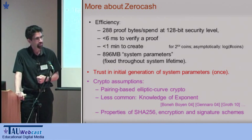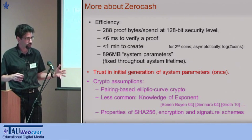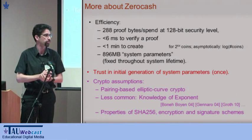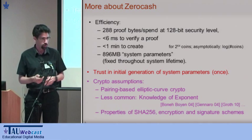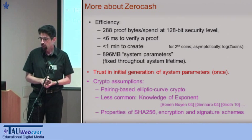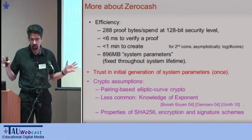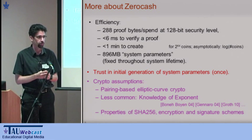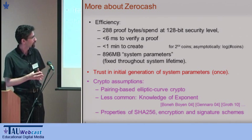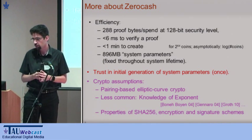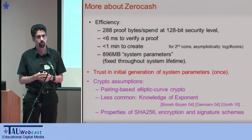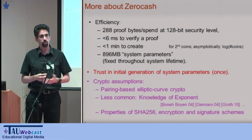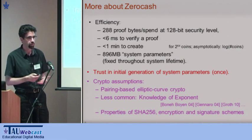The parameters are set once and for all to enable the system to operate, and then you can continue doing transactions indefinitely. This parameter generation is trusted — but it's only done once. We are using elliptic curve crypto with pairing-friendly curves, and a knowledge assumption — the knowledge of exponent assumption — unfortunately a non-falsifiable one, but an increasingly popular one. Variants of these assumptions have been used for over a decade and seem heuristically to be okay, with no interesting known attacks. We also use standard hash functions, encryption schemes, and signature schemes.